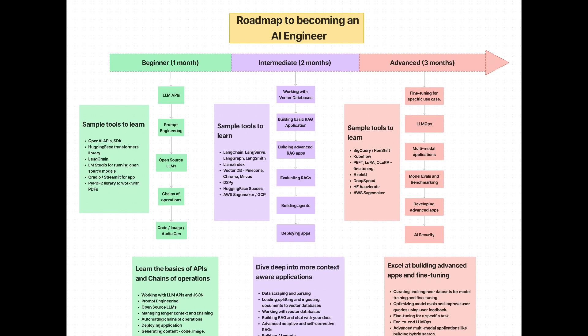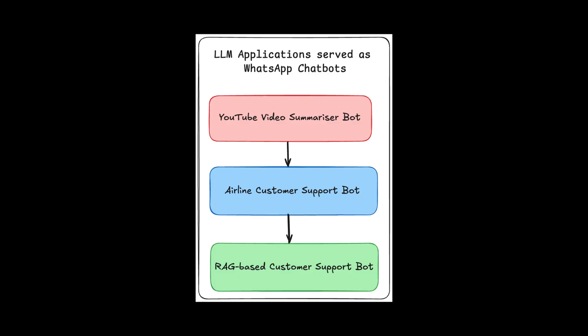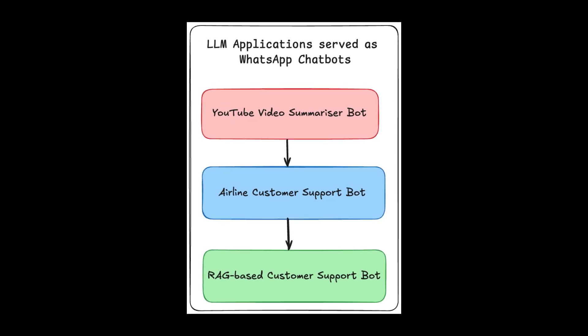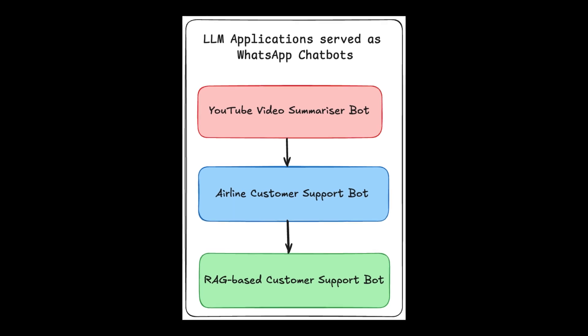That's something I've mentioned in my roadmap to become an AI engineer also. This is going to be a beginner level course where you start from learning to build with LLMs. You start by understanding how to work with LLM APIs. Then you apply those skills to build three different types of LLM applications. And not just that, you serve those applications as chatbots on WhatsApp.